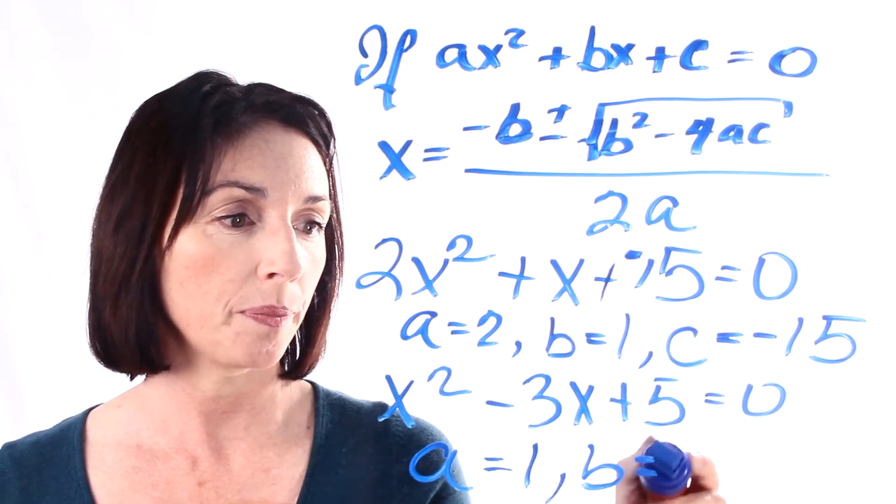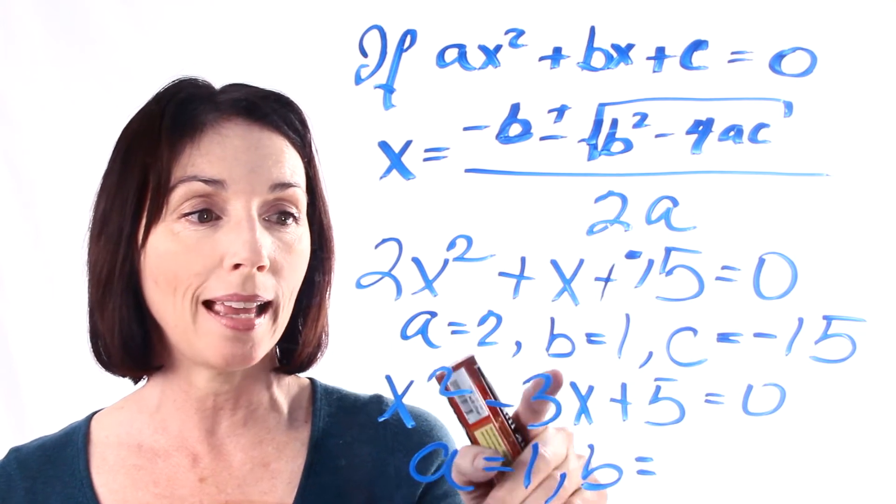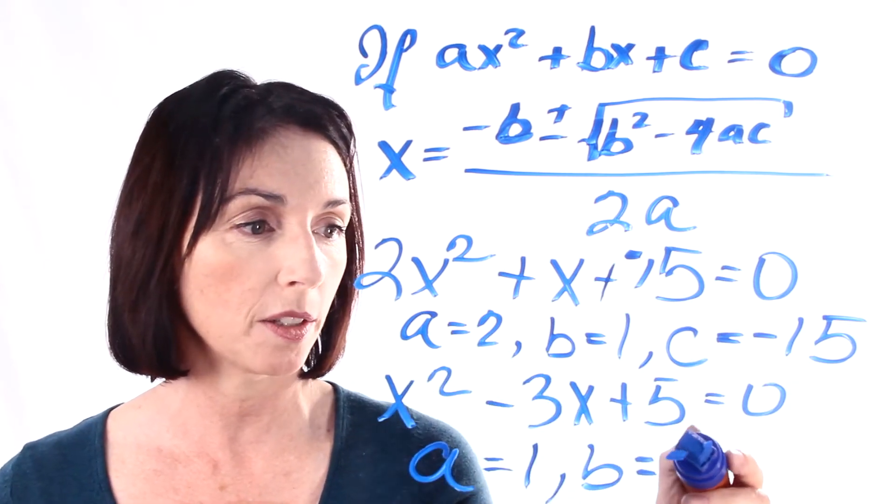What about b? We're subtracting 3x. So that means we're multiplying x by a minus 3. So b is equal to minus 3.